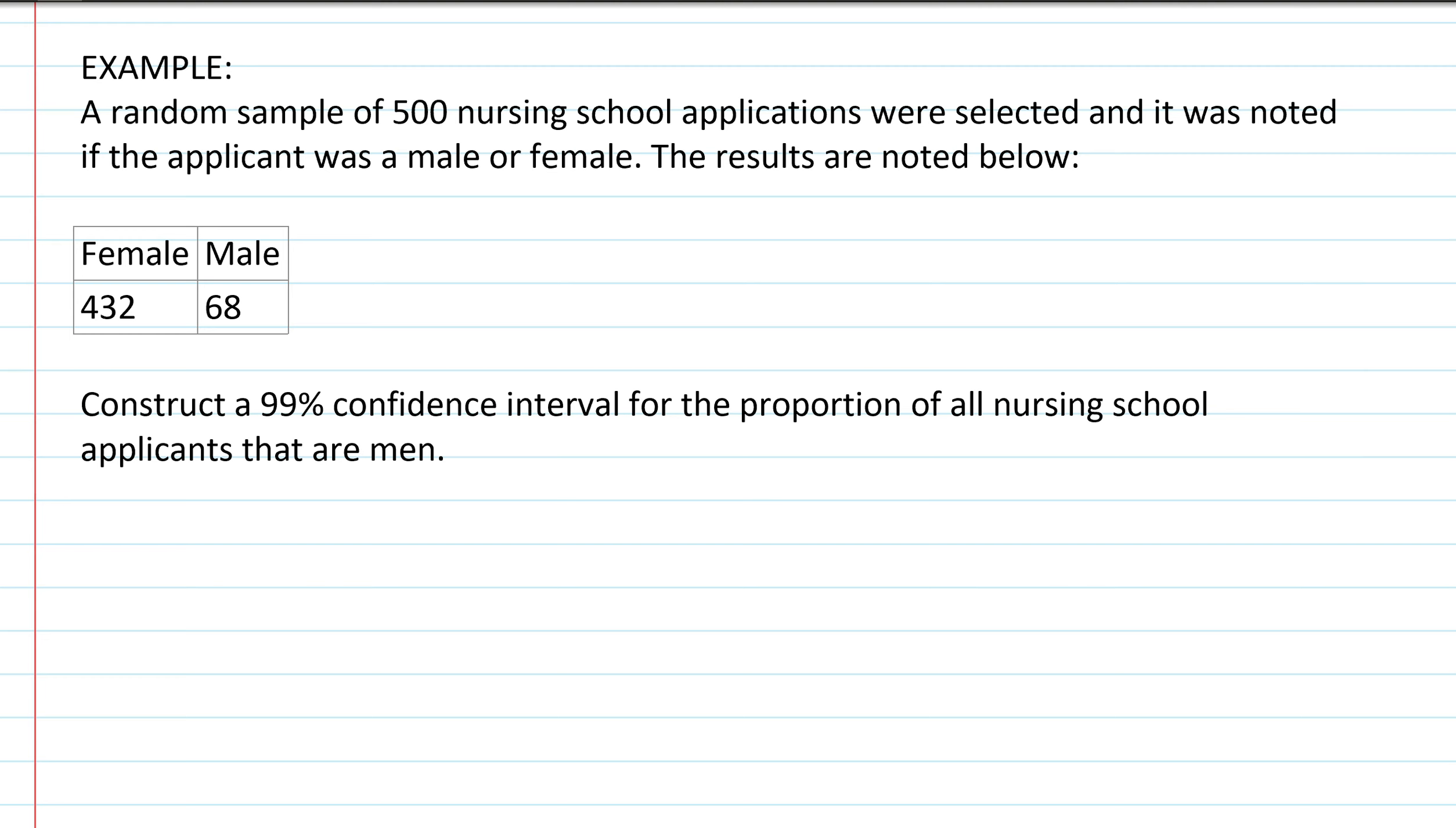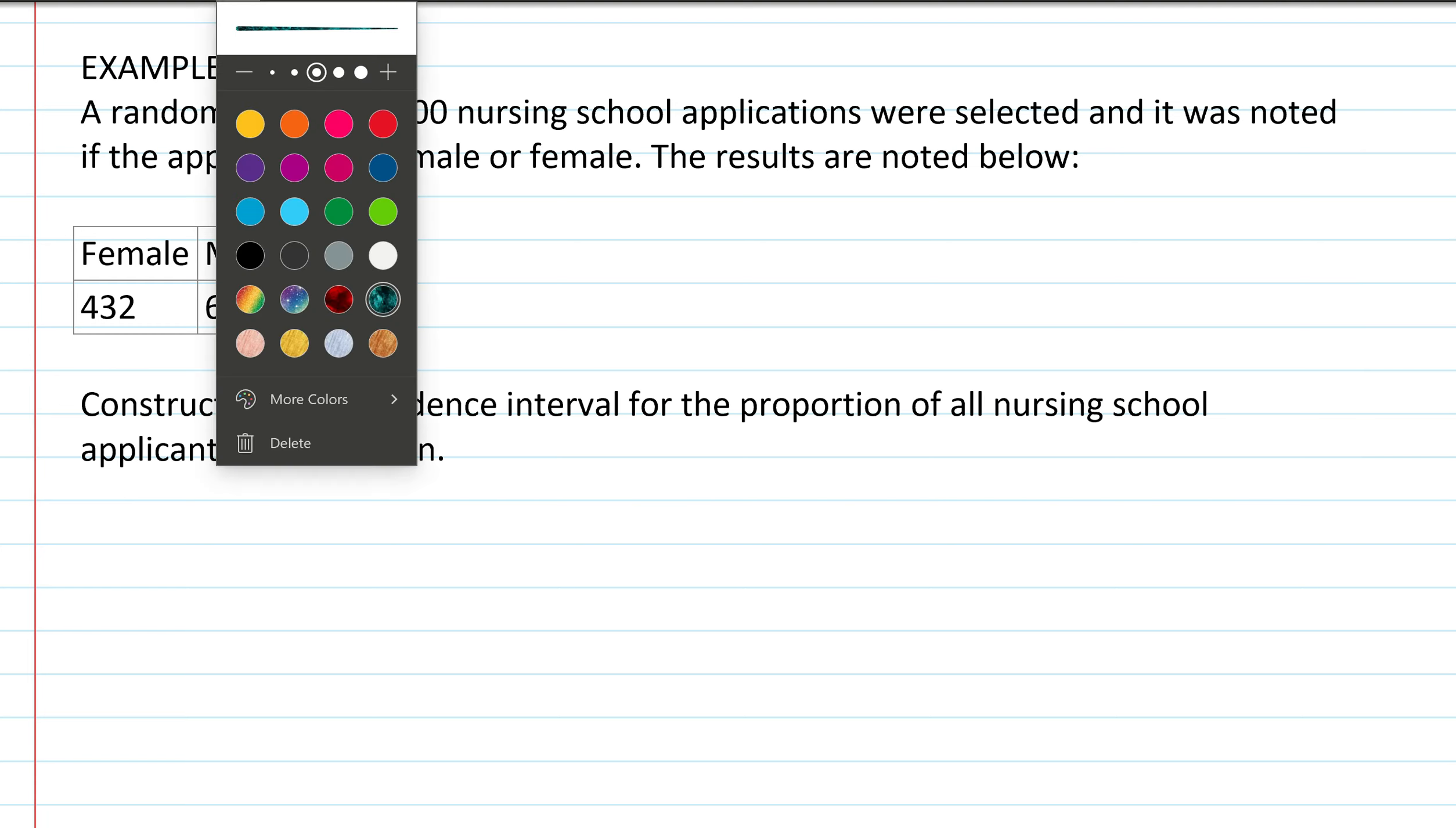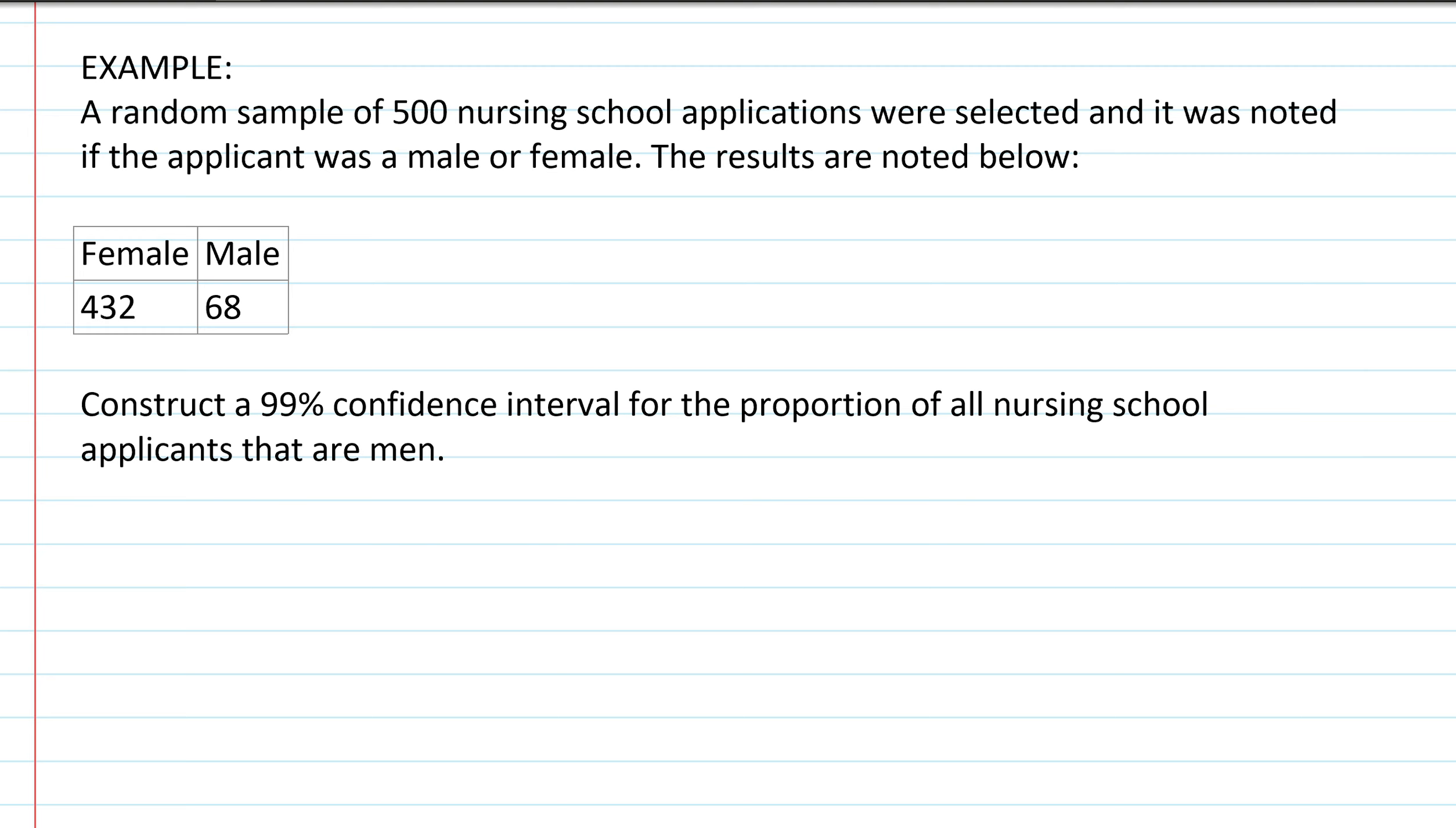All right so in this example it says that a random sample of 500 nursing school applications were selected and it was noted if the applicant was a male or female. The results are noted below: female 432 and male 68. We're asked to construct a 99% confidence interval for the proportion of all nursing school applicants that are men. Okay so we're going to solve this with the technology, we're going to use StatCrunch. First we should probably find out our p-hat, that proportion, so it looks to be that we're seeing that 68 over the entire amount which is 500 because we're looking at the proportion of nursing school applicants that are men. So 68 over 500.